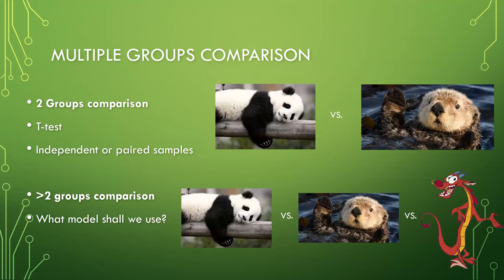Multiple groups comparison is a research request that scholars and data scientists encounter commonly. When we are dealing with comparison between two groups, t-test is recommended. For example, I want to compare the sleep duration in hours between a group of panda and a group of otter. I will choose independent t-test to see if their sleep duration is statistically significantly different. If I want to compare observations in one group, say only in the panda group, then I will use paired t-test instead.